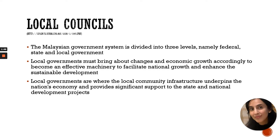The Malaysian government system is divided into three levels: federal, state, and local government. We only have one federal government, but we have state governments and also local governments. Local governments must bring about changes and economic growth accordingly to become an effective machinery to facilitate national growth. From the community level, they contribute to the economy, then to the state, and the states contribute to the country.